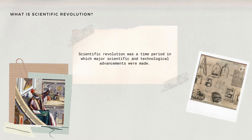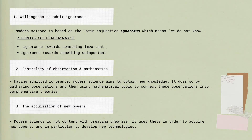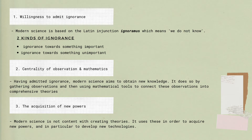Harari, the author of the book, states that modern science is different from pre-modern science and from all previous traditions of knowledge in three critical ways. First is willingness to admit ignorance. Modern science is based on the Latin injunction ignoramus, which means we do not know. This suggests that modern science emerged from our willingness to admit our ignorance or our lack of knowledge with the things that surround us. According to Harari, the great discovery that launched the scientific revolution was that humans do not know the answers to their most important questions. There are two kinds of ignorance behind this statement: ignorance towards something important, and ignorance towards something unimportant.